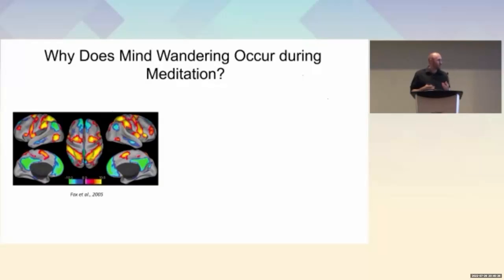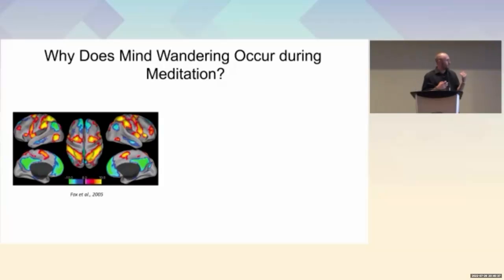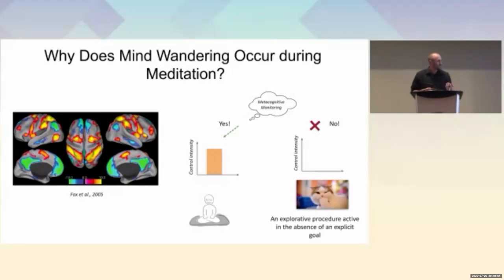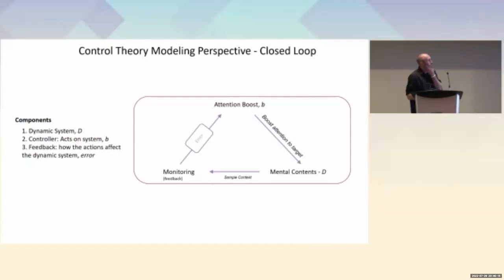To answer why the mind wanders during meditation, I'll construct a model hypothesizing a relationship between metacognitive monitoring and the control signal representing the frontal-parietal network, and how that system interacts with the default mode network. Specifically, if there is an internal metacognitive sample of what is on mind, the appropriate control signal can be applied to maintain on-task states. However, in the absence of a metacognitive sample, no control is generated, pushing the state toward mind wandering — defined as an explorative procedure active in the absence of an explicit goal.